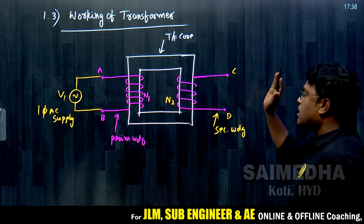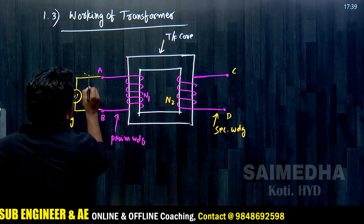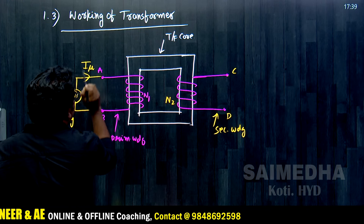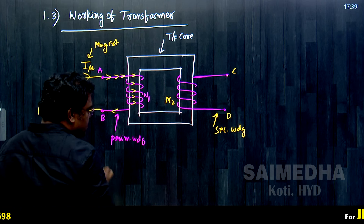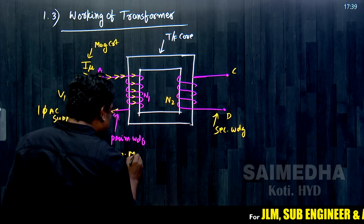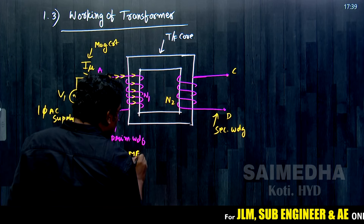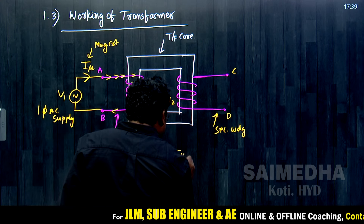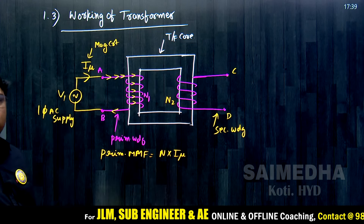When we connect supply to the transformer, a current passes through the primary winding. This current is called the magnetizing current. When the magnetizing current passes through the coil with N1 number of turns, we get the primary MMF — the magnetomotive force. MMF is equal to the number of turns multiplied by the magnetizing current. This MMF produces a flux in the coil.